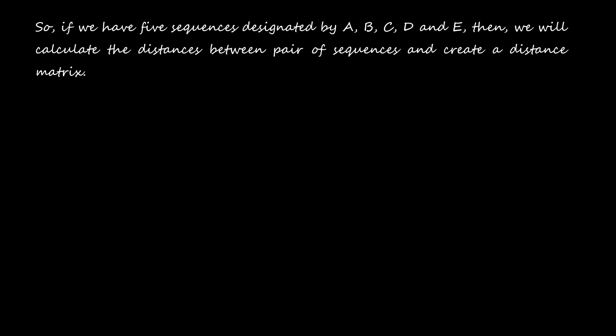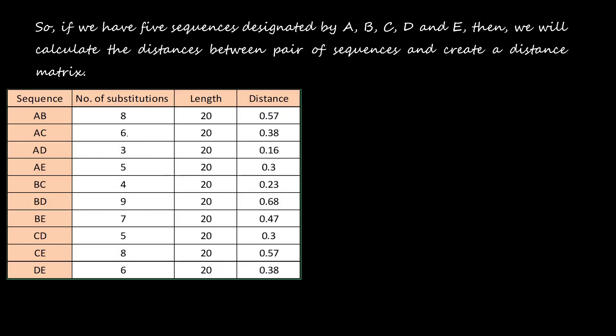If we have five sequences designated by A, B, C, D, and E, then we will calculate the distances between pairs of sequences and create a distance matrix. This is how we calculate the distances between two sequences each, and then we prepare a distance matrix.